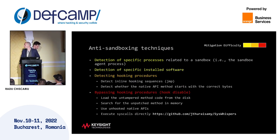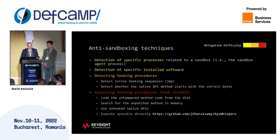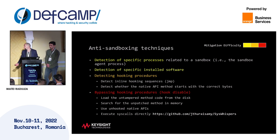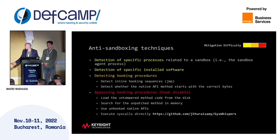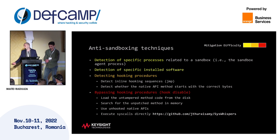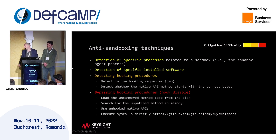For the anti-sandbox techniques, we have detection of specific processes that sandboxes use — like specific installed software — detecting hooking procedures like jumps, and bypassing hooking procedures like hook disabling, using unhooked APIs, and executing syscalls directly.